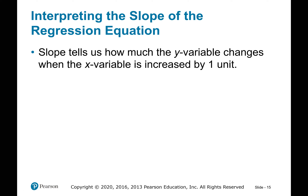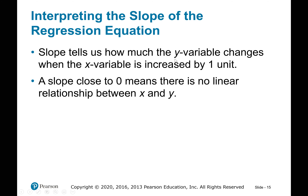Interpreting the slope of the regression equation: the slope tells us how much the y variable changes when the x variable increases by one unit. This is exactly the same concept as in mathematics. A slope close to zero means there is no linear relationship between x and y.